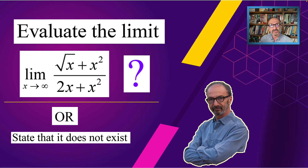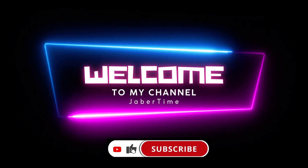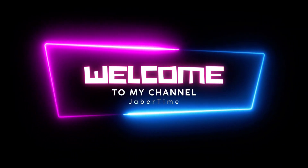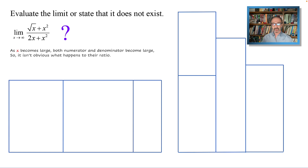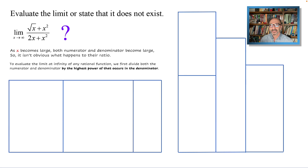We need to evaluate the limit involving infinity, and we just can't deal with it as is — we need to simplify with some technique to evaluate the limit or state that it does not exist. The limit as X approaches infinity must be treated differently than normal limits when X approaches a certain number. As X approaches or becomes large, both numerator and denominator become large, so it's not obvious what happens to the ratio.